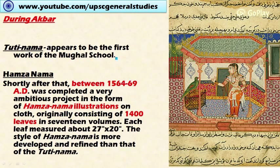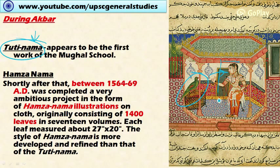The Akbar period is the most significant phase. The first and formative phase is marked by the Tutinama, meaning 'Tales of the Parrot,' where a parrot tells stories to a woman. The stories are told through pictures accompanied by text, making it a narrative illustrated manuscript.